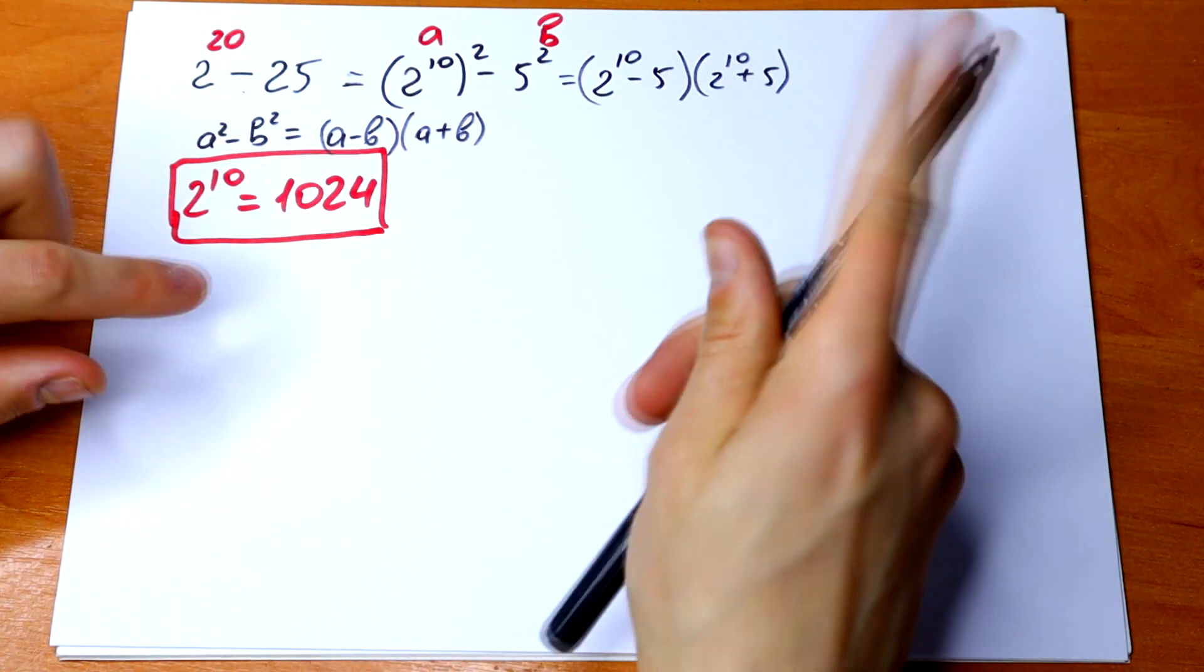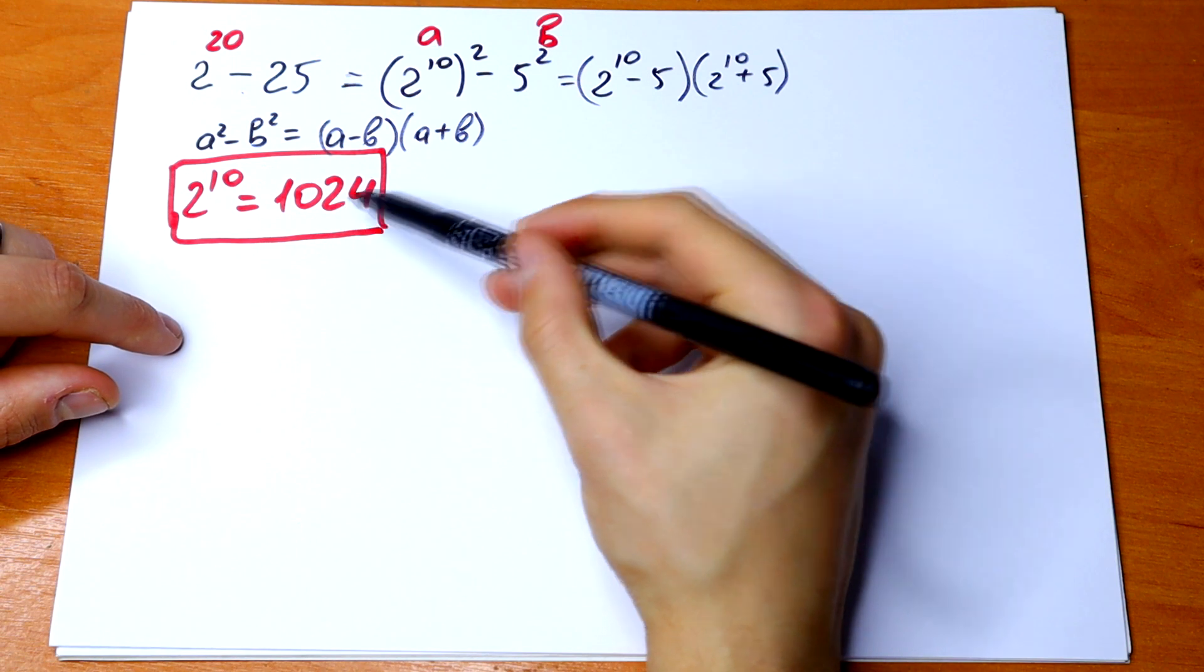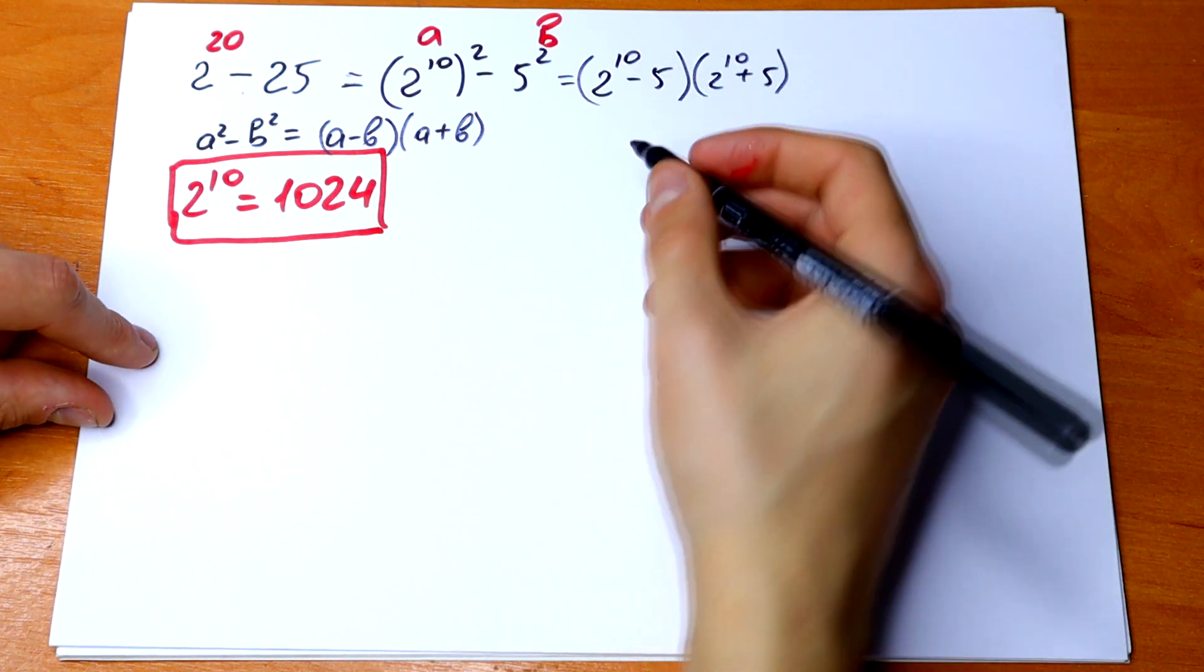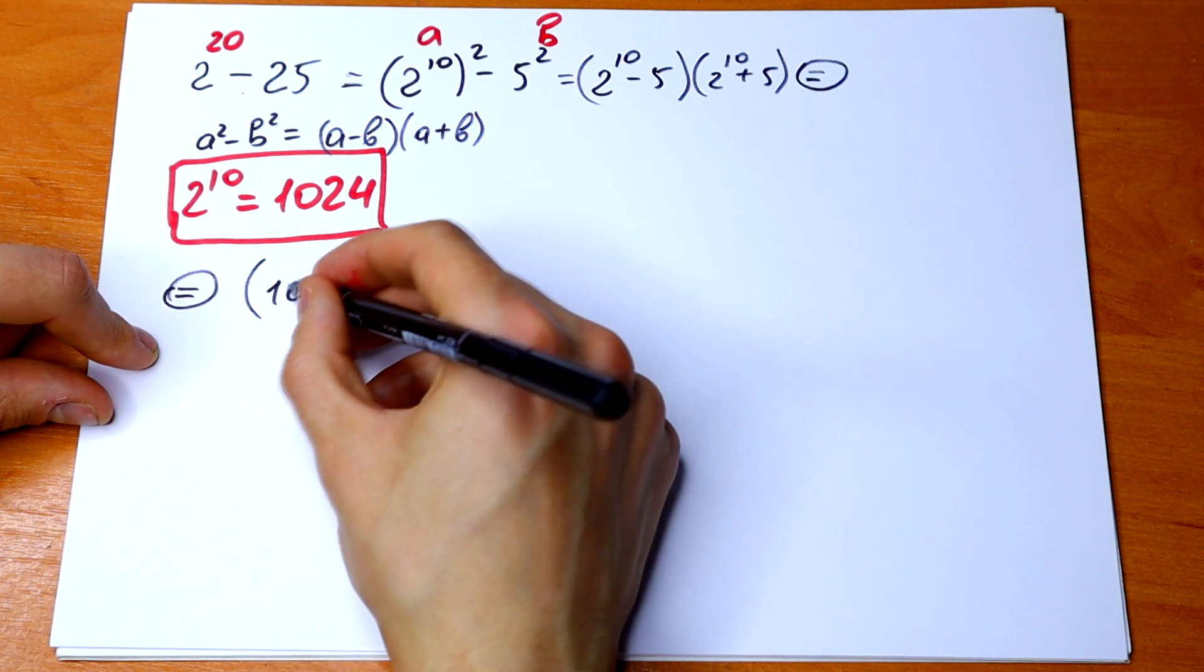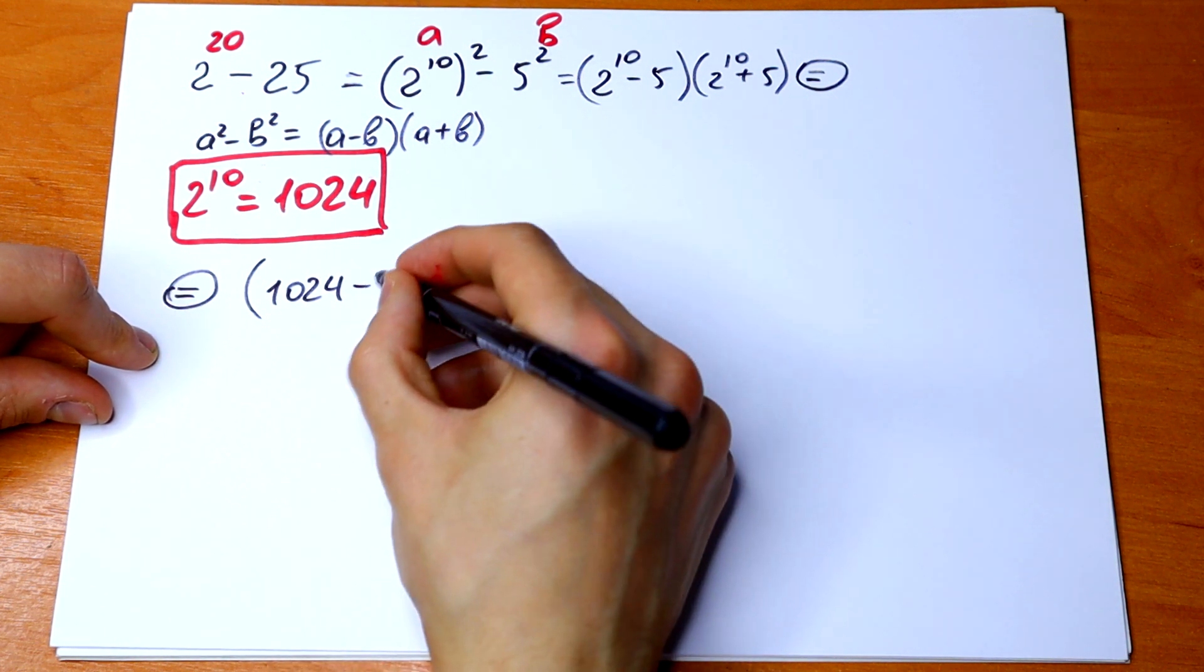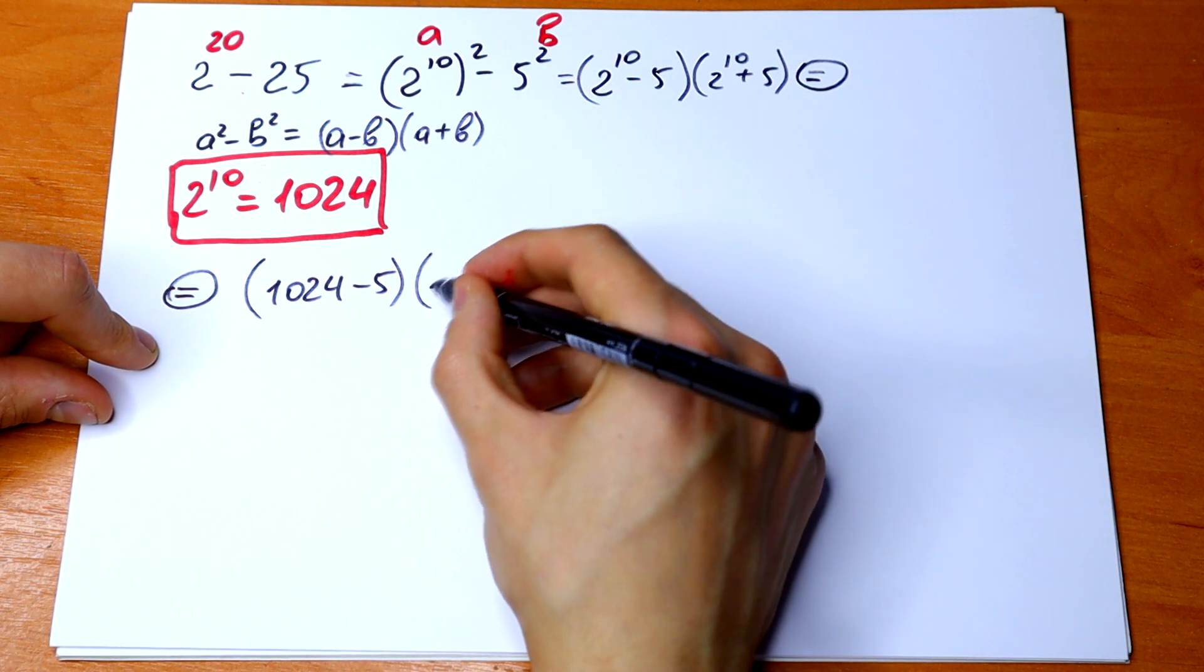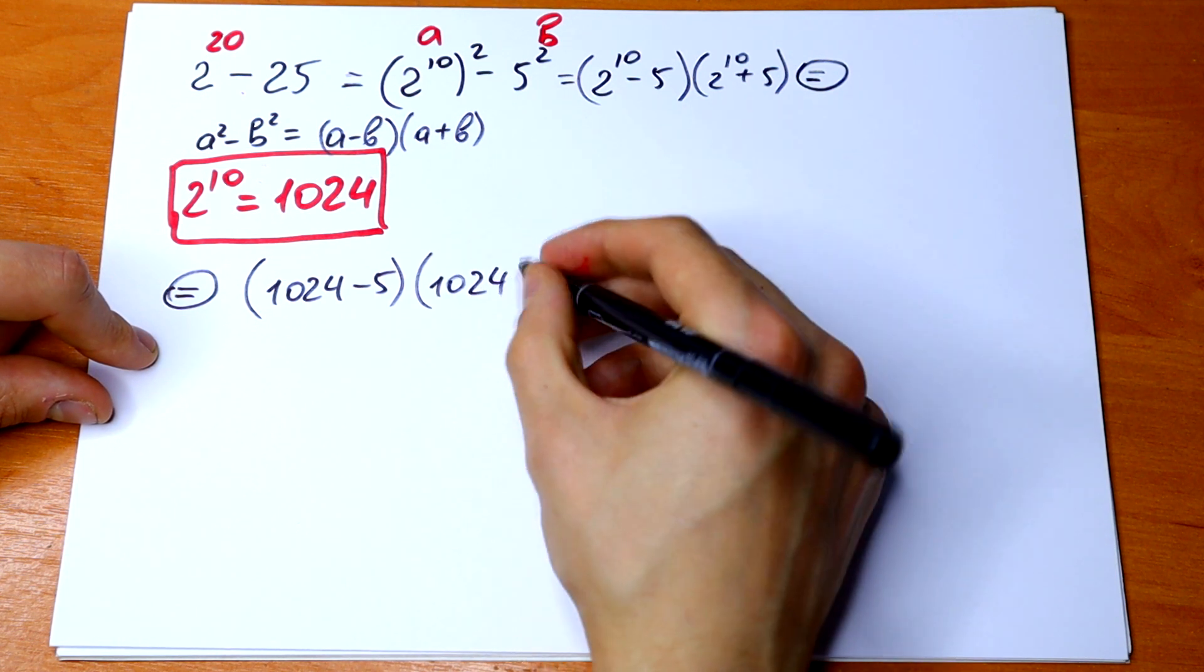Okay, so we can write 1024 instead of 2 to the 10th power. So we will have 1024 minus 5 and 1024 plus 5.